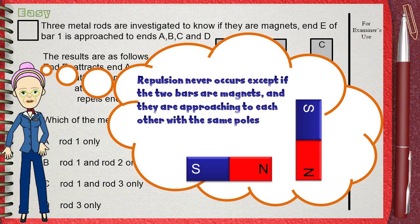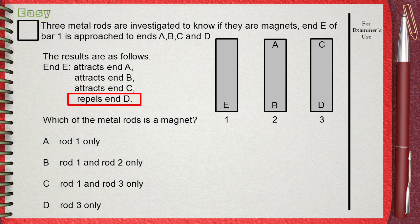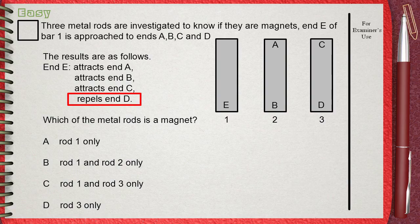repulsion can never happen. The key to the answer is that end E repels end D. This means that bar 1 which contains end E and bar 3 which contains end D both are magnets. But since bar